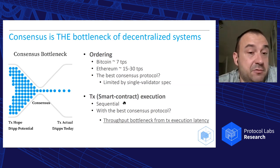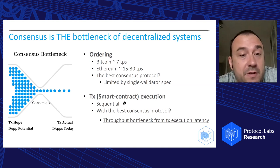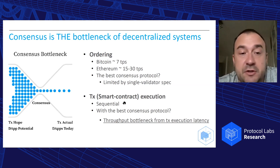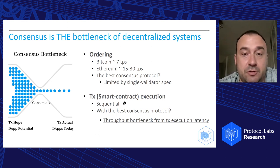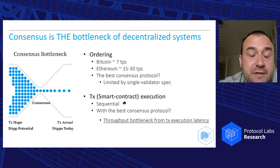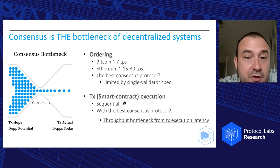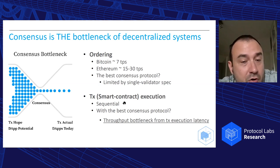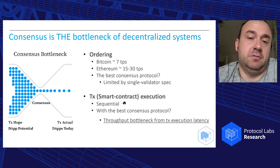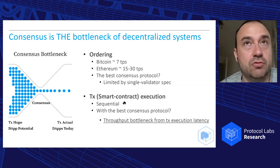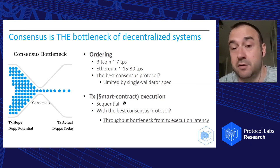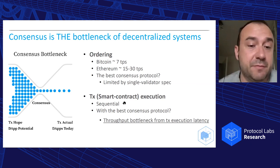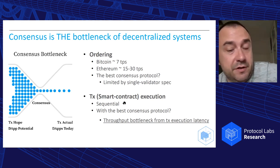Depending on your goals, you can put even the best consensus protocol and it's still going to perform at basically how a single machine performs. One problem is sequencing transactions and establishing total order and addressing these bottlenecks. The other is transactional smart contract execution — in systems like Ethereum, smart contract execution is sequential. Decades of distributed systems research give us ideas for parallel execution, but it remains a problem.